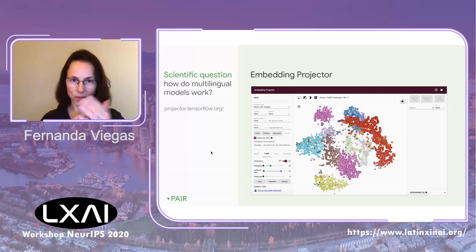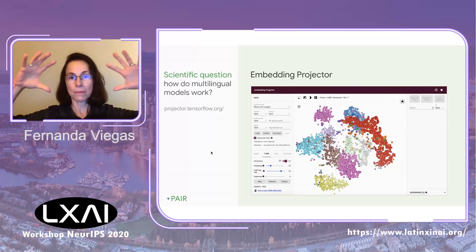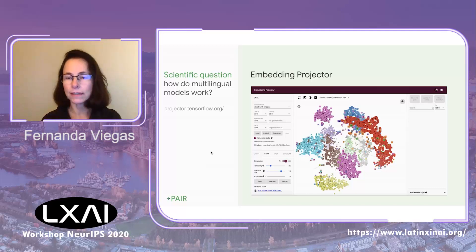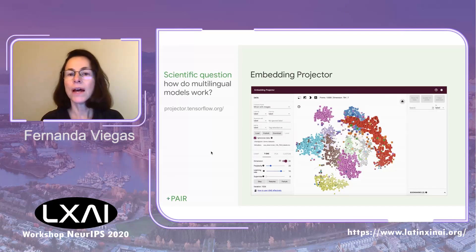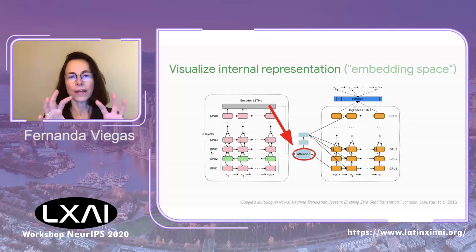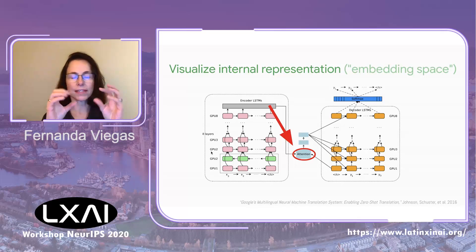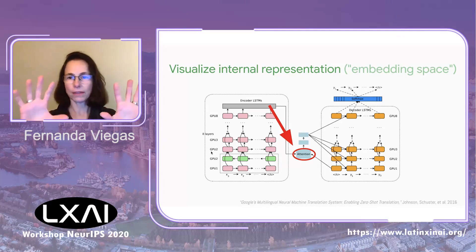Our team had built a tool called the Embedding Projector, which allows you to take massively high-dimensional spaces and project them into 3D so you can start inspecting what these embedding spaces look like. We decided to visualize the internal representation of these embedding spaces — specifically the attention vector between the encoder and the decoder.